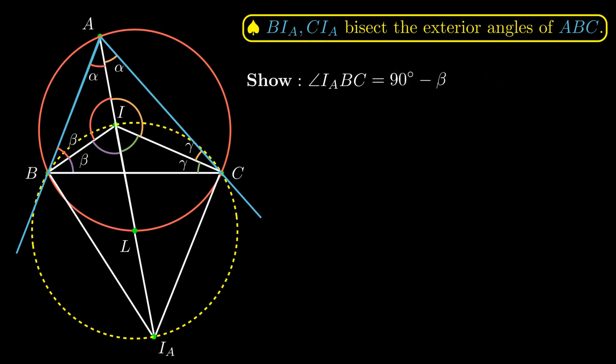We will actually use the fact that I, I sub A is the diameter of the circle, which means that angle I, B, I sub A equals angle I, C, I sub A, and they are equal to 90 degrees.